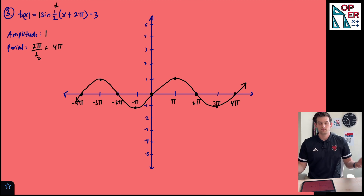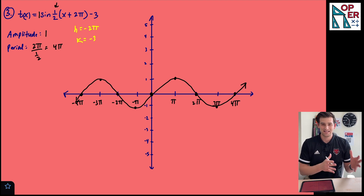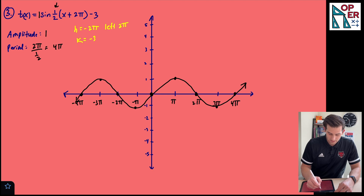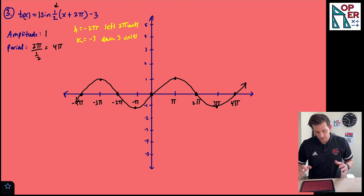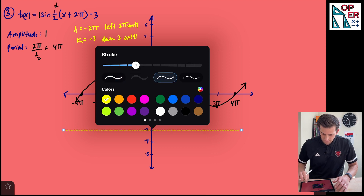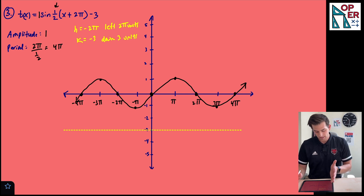That would be the graph with no translations. Now we see that h is negative two pi and k is negative three. It looks like x plus two pi, but remember we plugged in negative two pi into x minus h to get that plus, so we're going to go left two pi units. And k equals negative three means we're going to go down three units. Let's draw the midline through negative three as a dashed line. Some points like negative four pi and negative three pi may shift off screen, but we'll still see the shape.